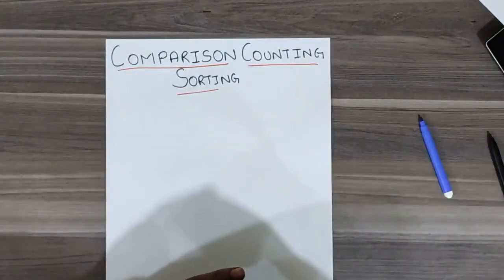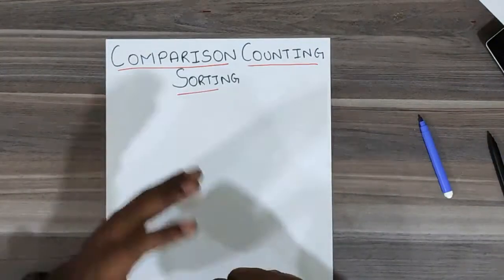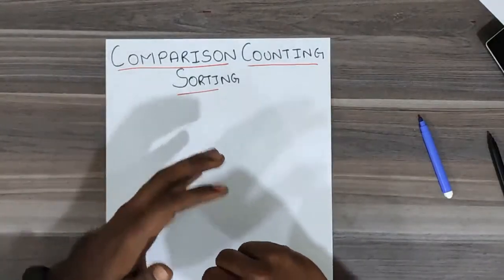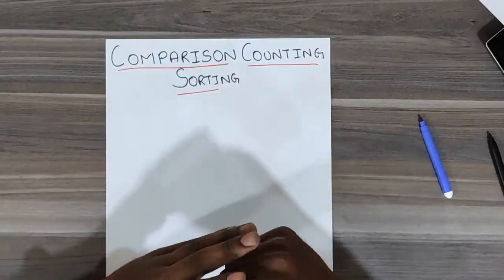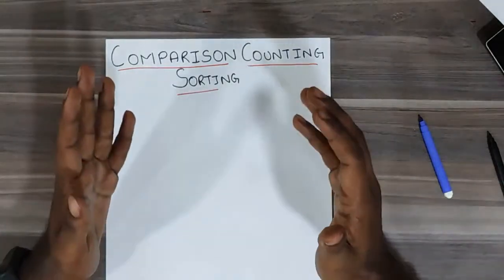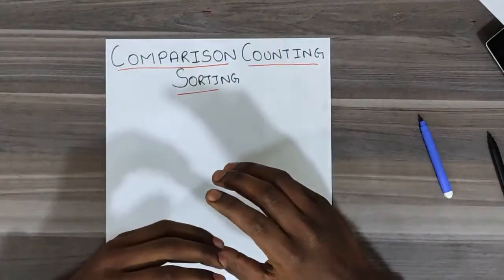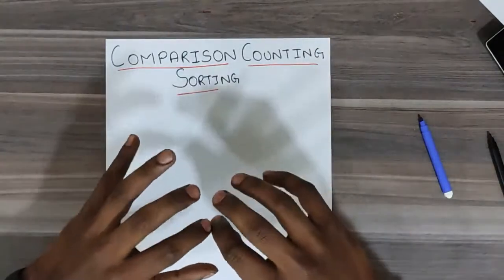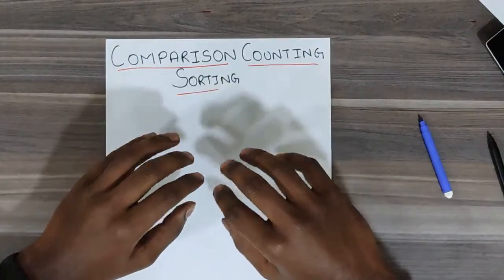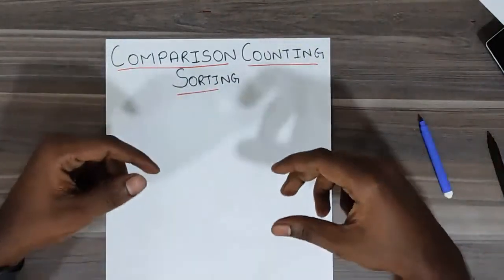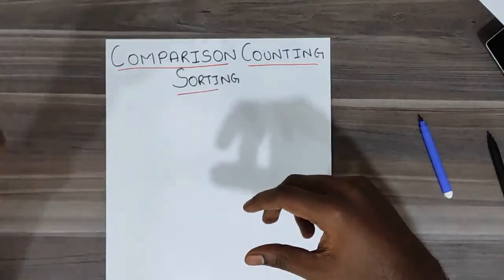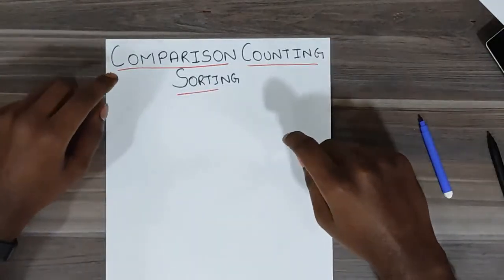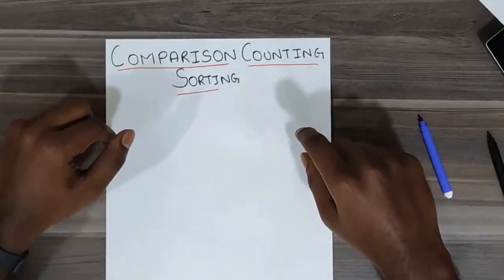Welcome back to the channel. We were looking at sorting algorithms, and one such sorting algorithm is comparison counting sorting. In all the other algorithms we tried to execute the sorting process without allocating extra memory space. Here, what we are trying to do is sort the array in less time by using additional space. Comparison counting sorting is one such algorithm which uses extra space for sorting.